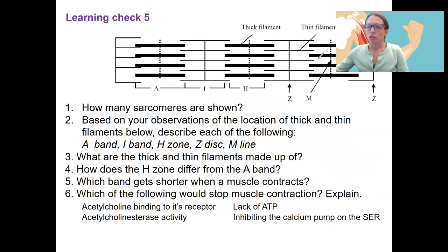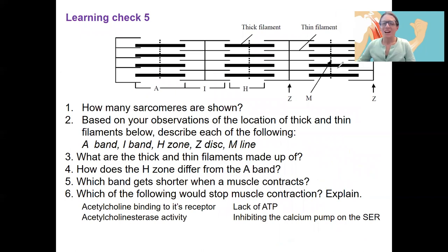Okay, we have a learning check here. Looks like a lot. Good review. So the first five here are all related to referring back to that sarcomere, those zones, filaments, all that fun stuff. And then number six is more related to what I just talked about. So stopping muscle contraction. Which of these four things would stop muscle contraction? So please name each one and say yes or no and explain why for each one. All right. Thank you.